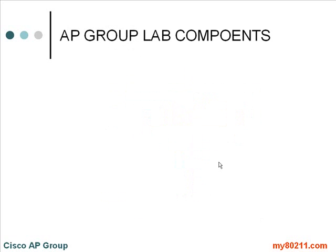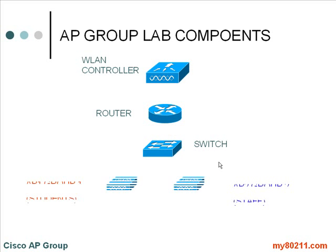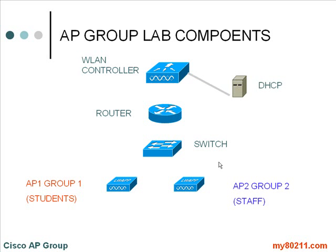Before jumping into the hands-on lab, let's discuss the different components necessary for AP grouping to work. We need a wireless LAN controller, a router for layer 3 segmentation, and a switch that the access points will be connected into. On the left we have AP group 1, which is Students, and on the right we have AP group 2 for Staff. We have a DHCP server with scopes already set up for both AP group 1 and AP group 2, and then we'll configure the different AP groups for students and staff.